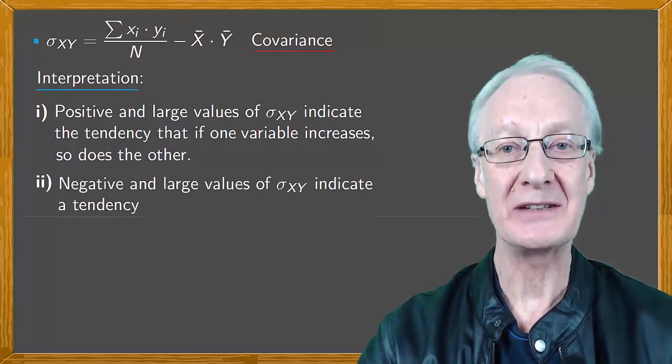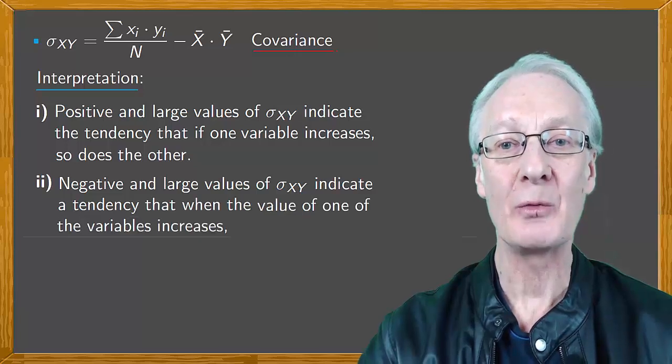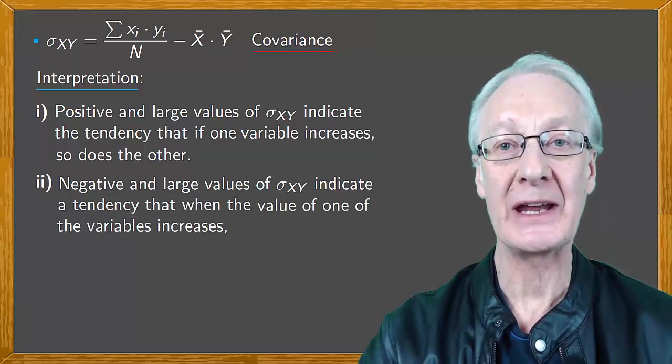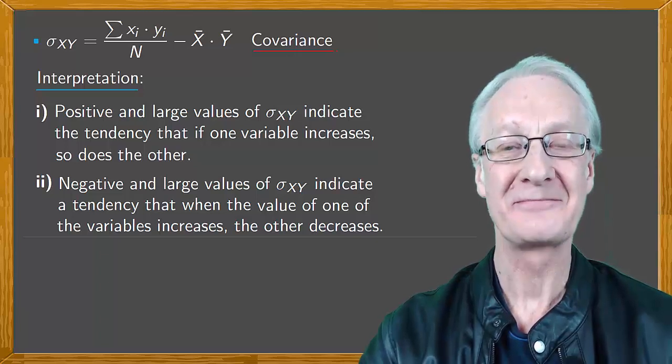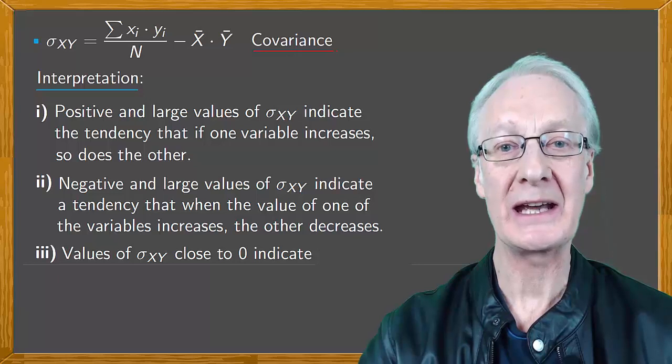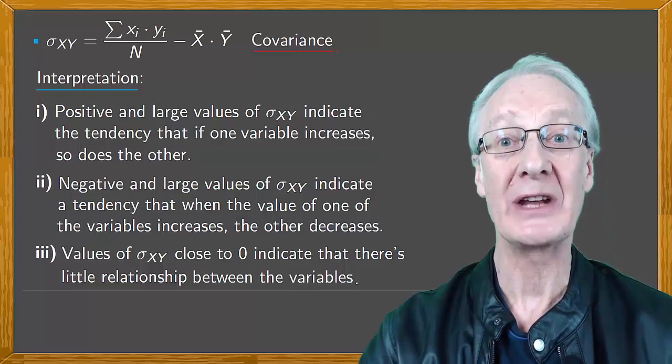Second, negative and large values of covariance indicate a tendency that when the value of one of the variables increases, the other decreases. Finally, values close to zero indicate that there's little relationship between the variables x and y. In other words, the variables are more or less independent.